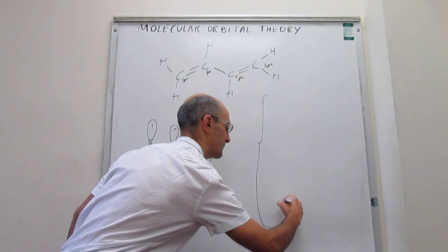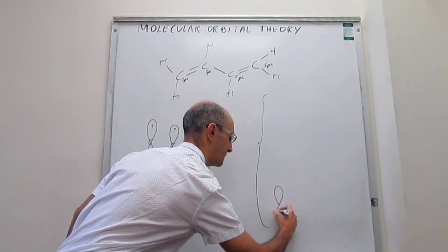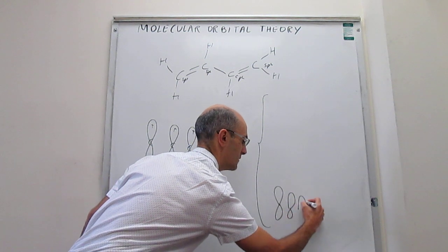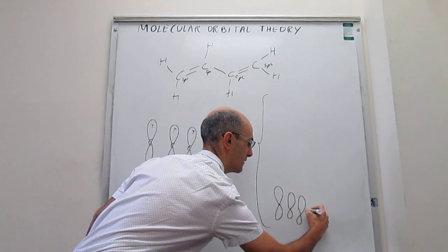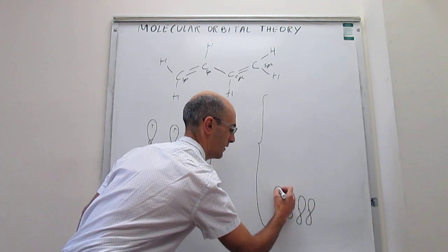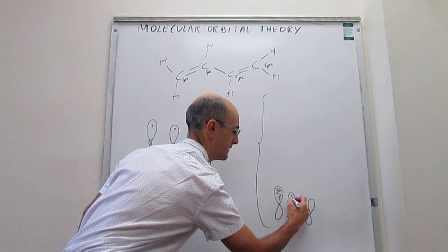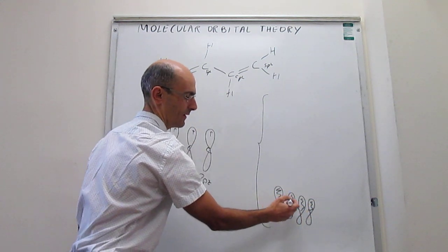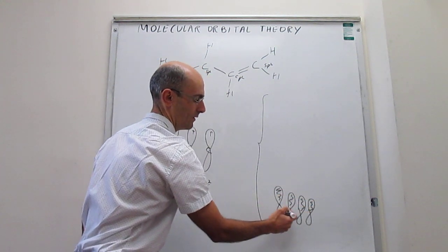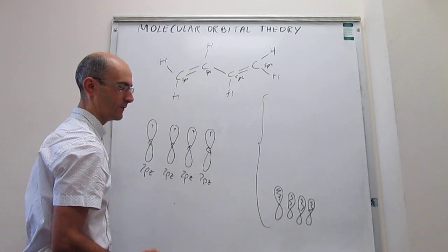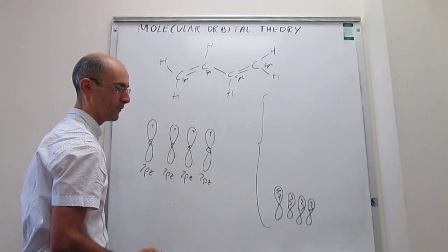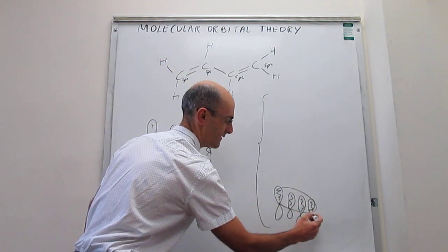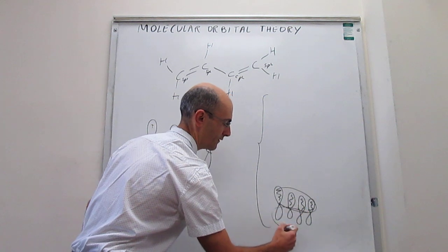The first linear combination has orbitals one, two, three, and four all in phase — either all positive or all negative — giving the first molecular orbital, which essentially expands the entire length of the molecule.